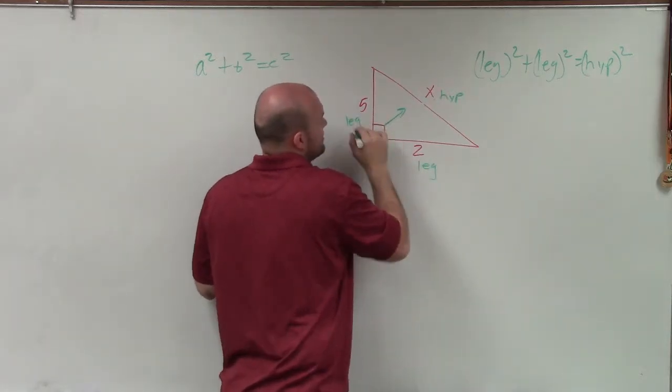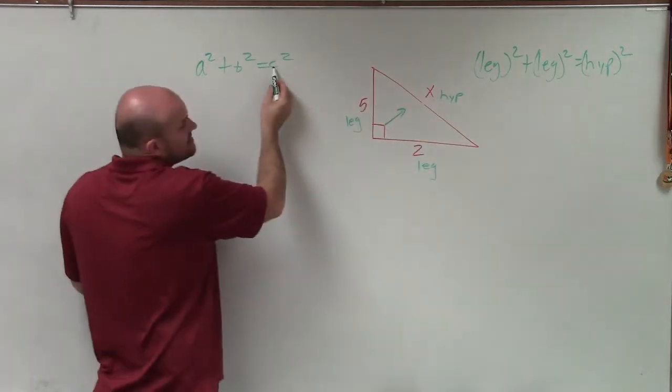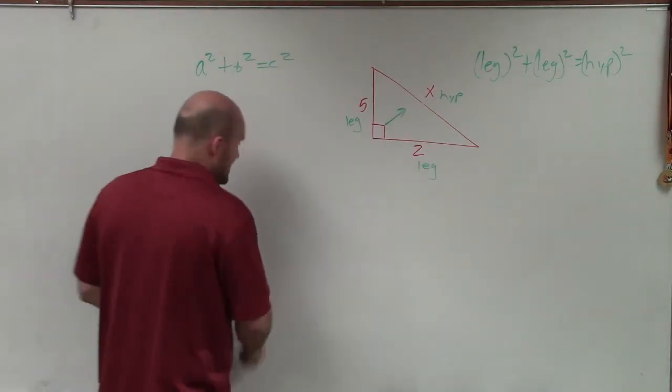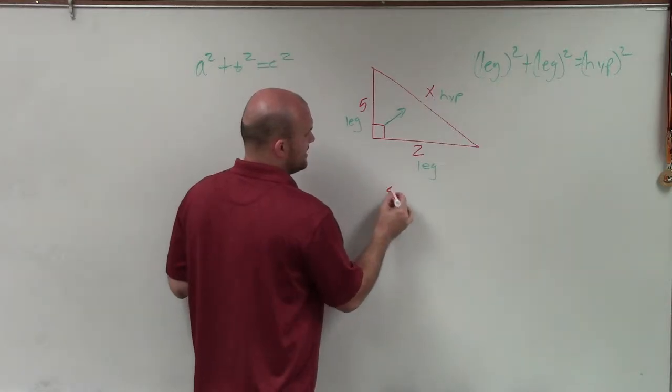If you want to use your hypotenuse as c squared instead of writing hypotenuse, that's perfectly fine. But to apply the Pythagorean theorem, all I'm going to do is say that leg squared plus leg squared equals my hypotenuse squared.